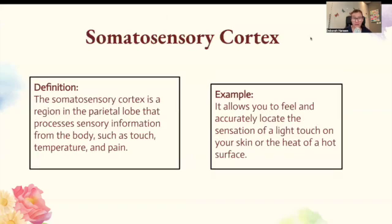Somatosensory cortex. The somatosensory cortex is a region in the parietal lobe that processes sensory information from the body, such as touch, temperature, and pain. It allows you to feel and accurately locate the sensation of a light touch on your skin or the heat of a hot surface.